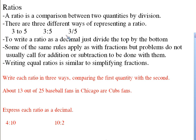To write a ratio as a decimal, all you do is divide the top number by the bottom number. Some of the same rules apply as with fractions, but problems generally do not call for addition or subtraction to be done with them. Writing equal ratios is similar to simplifying fractions though.